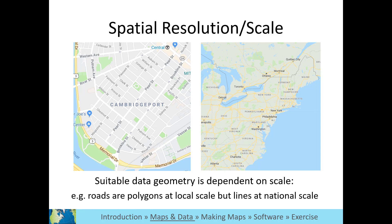What features are dependent on scale? In the city map on the left, you can see points of interest, street widths, directions and names, and public transportation stops. These are not visible in the regional map on the right because they are not needed at that scale and would make the map impossible to read. The regional map includes points that represent major cities, highways, and larger state and national parks.